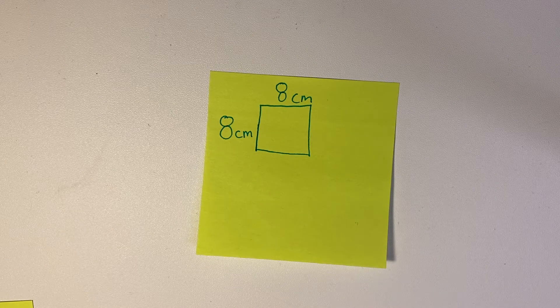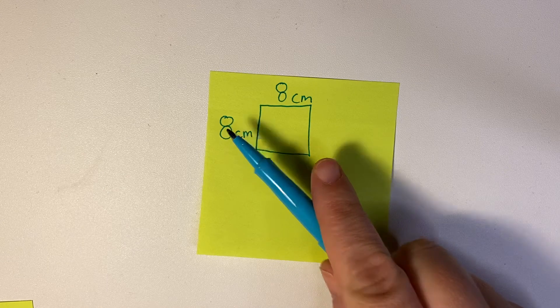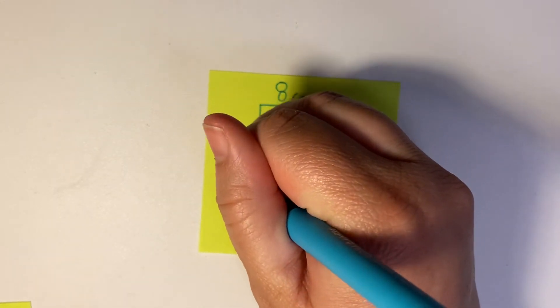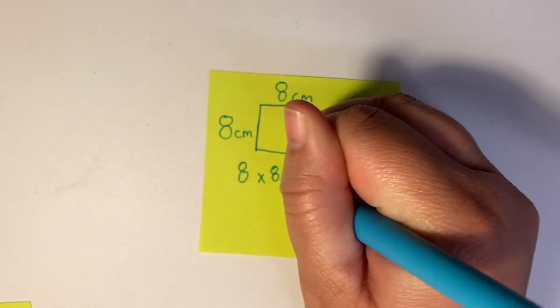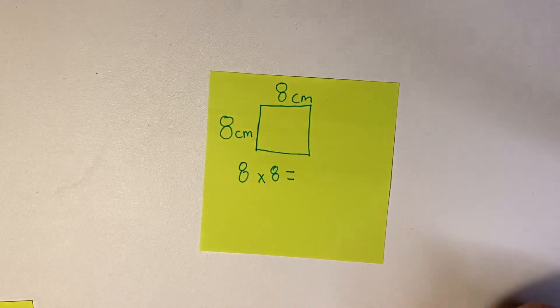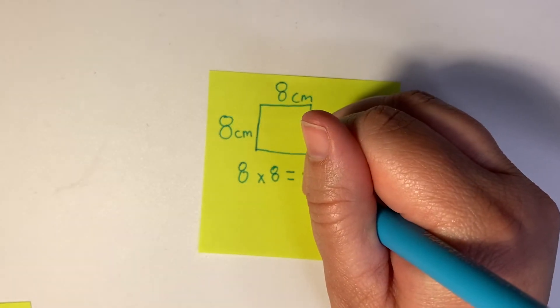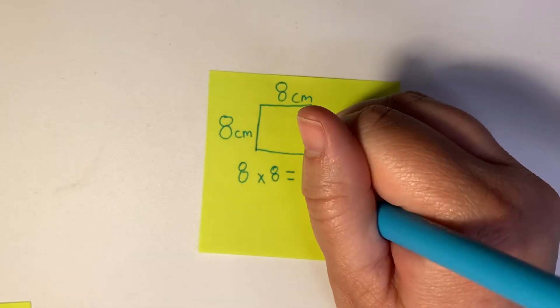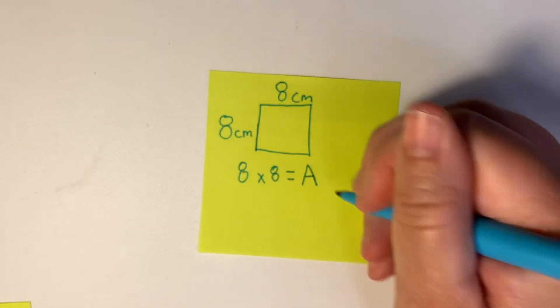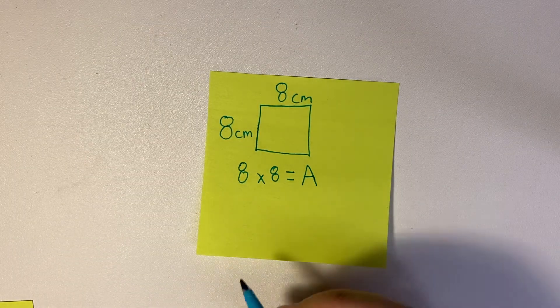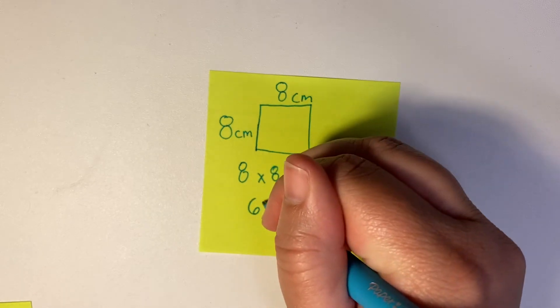Eight times eight equals our value that we're trying to figure out—our area. So if we do eight times eight, we get 64.